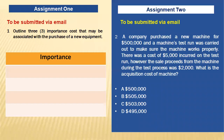Now for your assignment: first, outline three important costs that may be associated with the purchase of new equipment. Second, a company purchased a new machine for 500,000 dollars. A test run was carried out to ensure the machine works properly, costing 5,000. However, sales proceeds from the machine during the test process were 2,000. What is the acquisition cost of the machine?